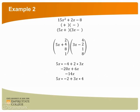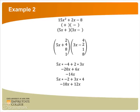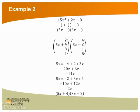Now we try the next pairing. We have 5x times negative 2 plus 3x times 4. This results in negative 10x plus 12x, which is positive 2x — exactly what we wanted. So 15x squared plus 2x minus 8 factors to 5x plus 4 times 3x minus 2.